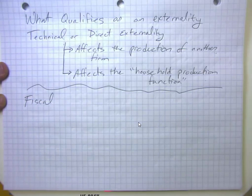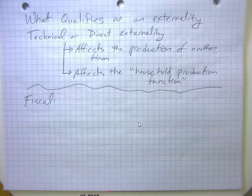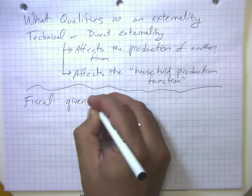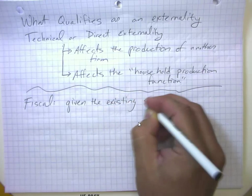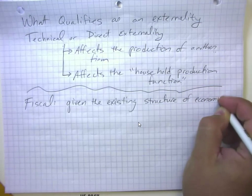Another type of externality is what we call a fiscal externality. So let's suppose we have a situation where some people are deciding to smoke or continue to smoke, and those people have higher health care costs than other people. And either through a private insurance company or through a government insurance plan, they raise costs for the insurer. Well, in that case, their smoking caused an external effect that raised costs for other people. But realize fiscal externalities are given the existing structure